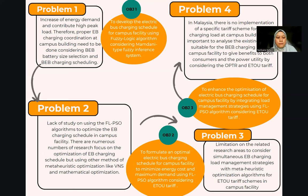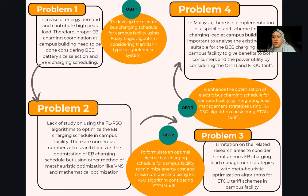Problem statement two is the lack of study using the FLPSO hybrid algorithm to optimize the EB charging schedule in campus facilities. There are numerous research papers focusing on optimization of the electric bus schedule, but using other methods like meta-heuristic optimization such as BNS, and many using mathematical optimization. Problem three is the limitation in related research areas to simultaneously consider EV charging load management strategies with meta-heuristic optimization for the ETAW tariff scheme. These two problems combine to form objective two: to formulate and optimize the electric bus charging schedule for campus facility to minimize energy cost and maximum demand using FLPSO algorithm, considering the ETAW tariff.